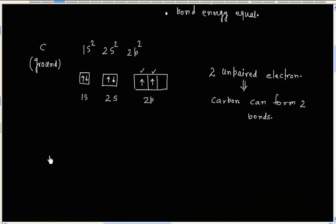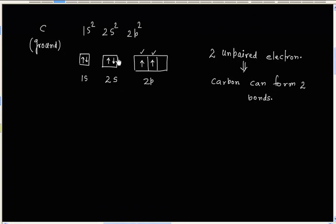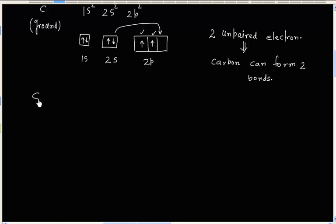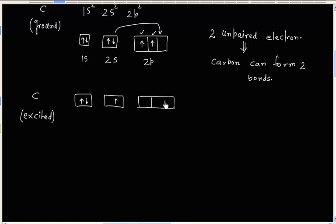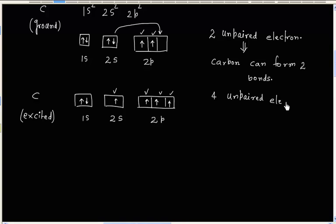So we have to have 4 unpaired electrons, and this can be done if I promote 1 electron from 2s to the 2p atomic orbital. That is, carbon in the excited state. Now its configuration will be: 2 electrons in 1s, 1 electron in 2s, and 3 electrons in the 2p atomic orbital. Now there are 4 unpaired electrons, so carbon can form 4 bonds.